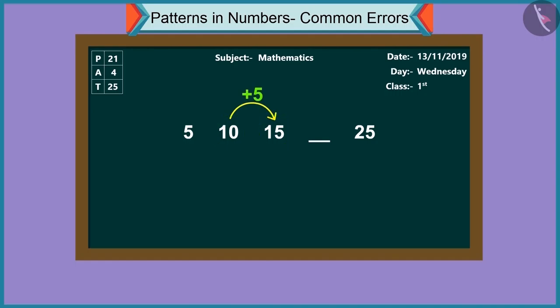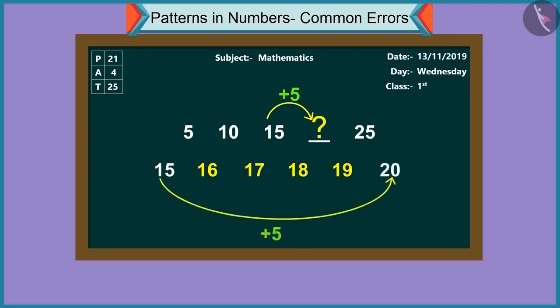So now tell me, in this pattern going forward, what number will we get if we add five to fifteen? If we add one to fifteen, we get sixteen. Adding two, we get seventeen. Adding three makes it eighteen. Adding four makes it nineteen. And adding five to fifteen will make it twenty.